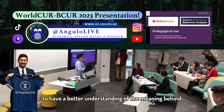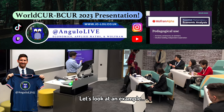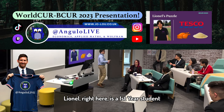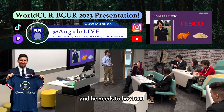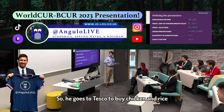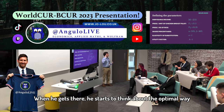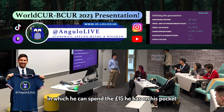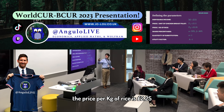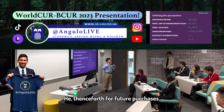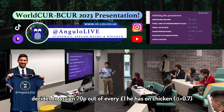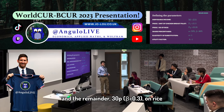So, to have a better understanding of the meaning behind such complex mathematics, let's look at an example. Leonel is a first-year student who has just arrived from Argentina and he needs to buy food. So, he goes to Tesco to buy chicken and rice. When he gets there, he starts to think about the optimal way in which he can spend the £15 he has in his pocket. He sees that the price per unit of chicken breast is £1.50, and the price per kilogram of rice is £2.25. He then decides, for future purchases, to assign £0.70 out of every £1 he has on chicken and the remainder £0.30 on rice.